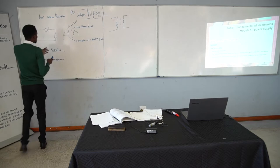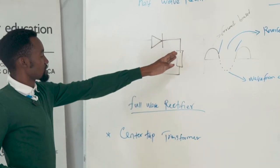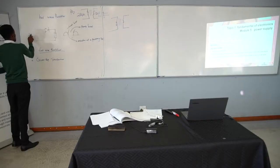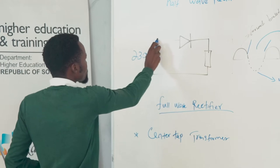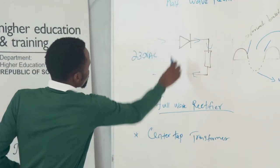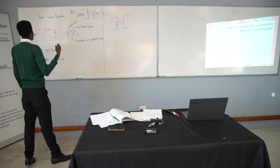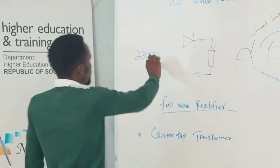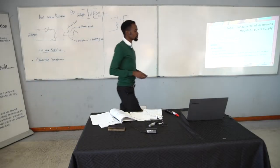For a half wave rectifier, we use only one diode, which is connected in series with a load or resistor. The current will flow from one direction back to the source. Remember the function of the diode — it is used as a voltage rectifier, so it has polarities: an anode and a cathode. When the voltage is supplied, the diode acts as a forward bias.